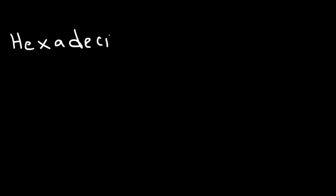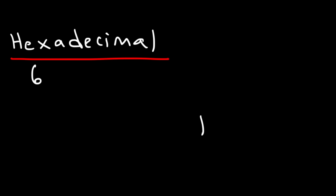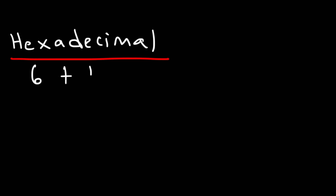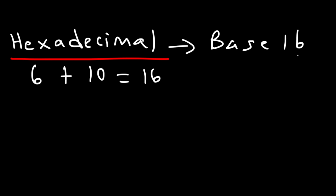Next we have the hexadecimal system. The prefix hexa — think of a hexagon, which has six sides, so hexa means six. We know decimal corresponds to ten, and six plus ten gives us sixteen. Therefore, the hexadecimal system is a base sixteen system.